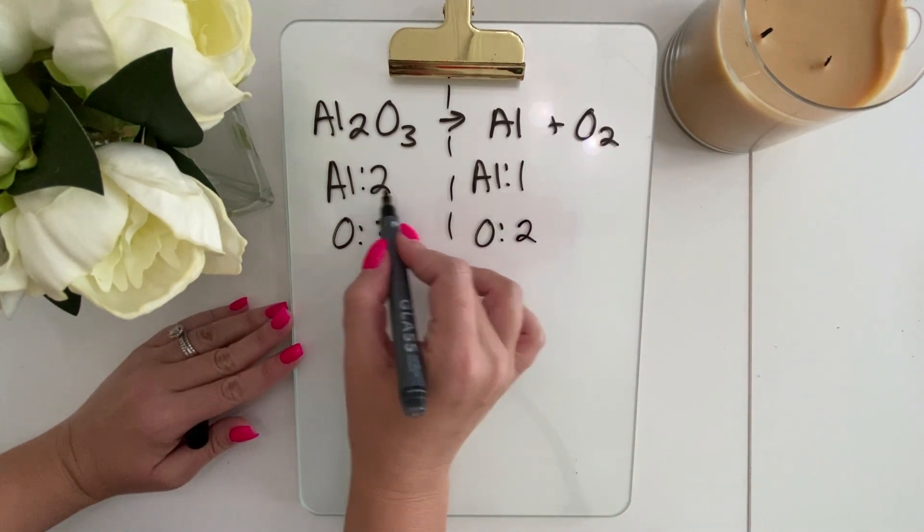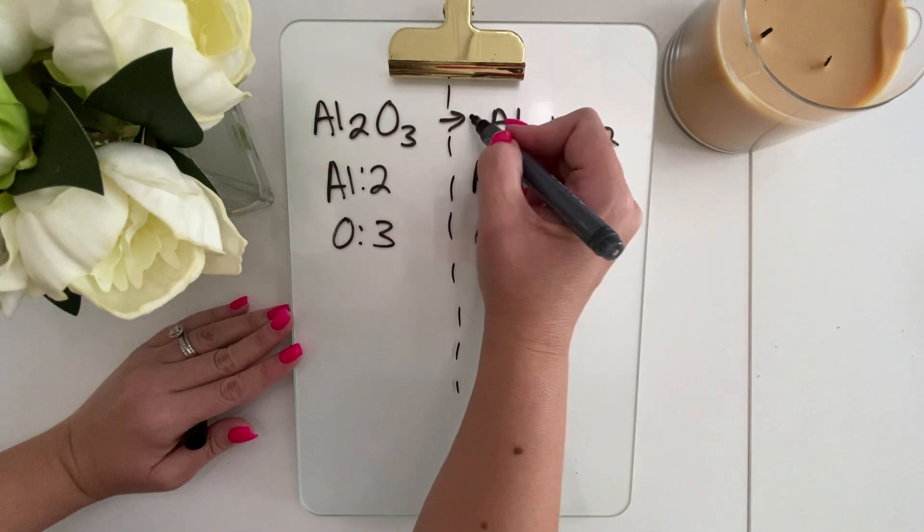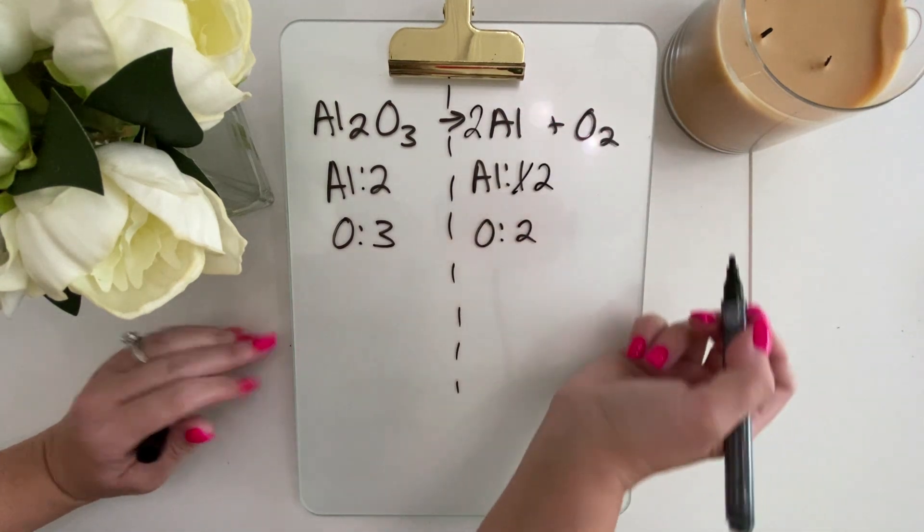We're not balanced. We're going to just go ahead and start with aluminum. We want this one to be a 2, so I'm going to put a 2 coefficient in front.